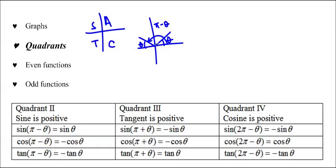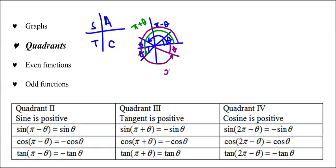If we're in the third quadrant and this is theta, then this angle is pi plus theta, and since sine is negative in that quadrant, sine of pi plus theta equals negative sine theta. If we're in the fourth quadrant and theta is the related acute angle, all the way around is 2 pi minus theta, and since it's negative in quadrant 4, sine of 2 pi minus theta equals negative sine theta.